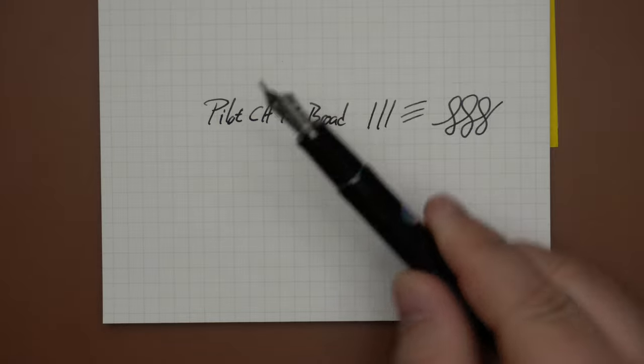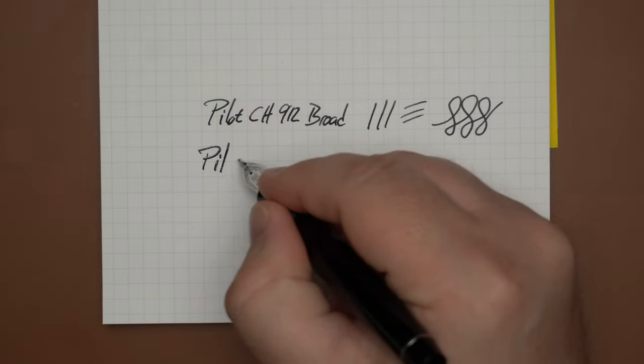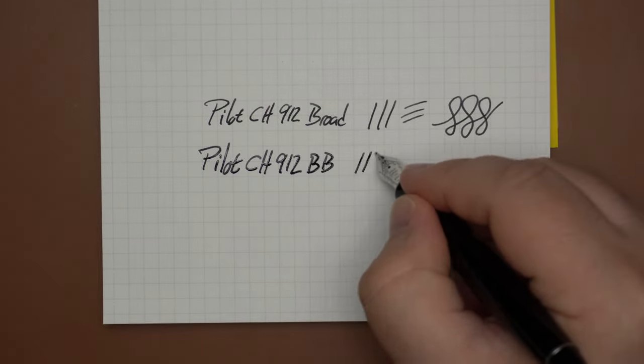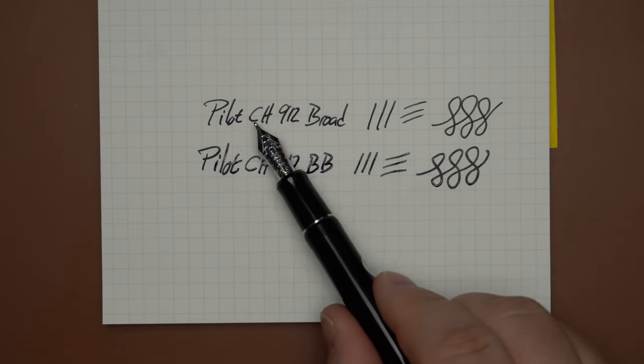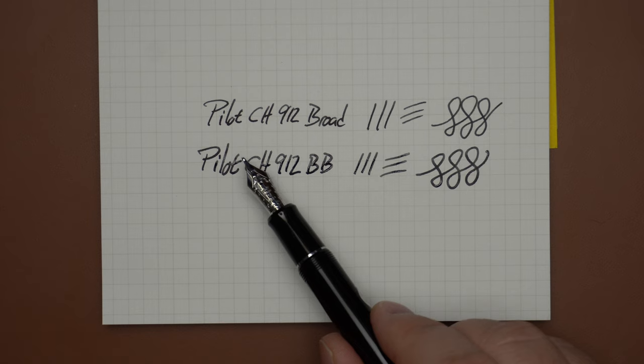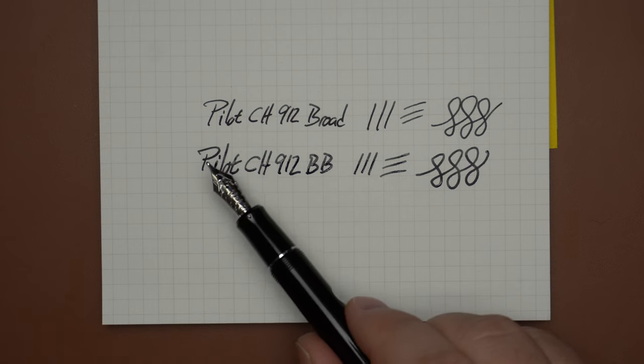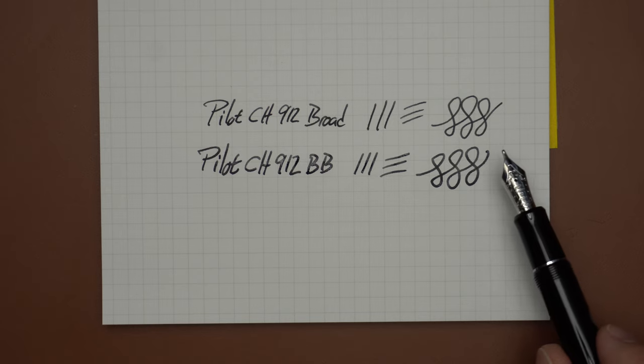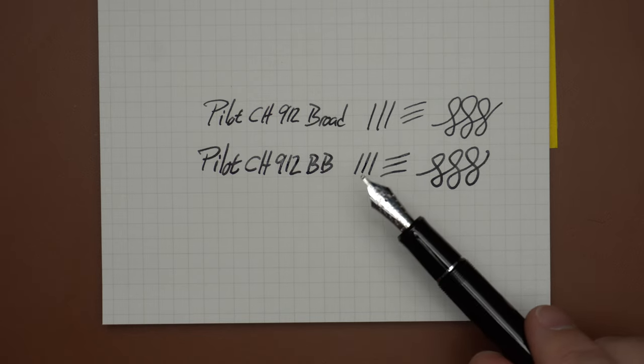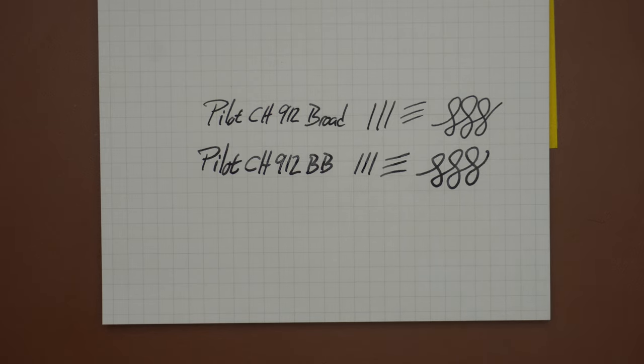We can go bigger, and that's the double broad here. And as you can see, there is a fairly good jump between the broad and the double broad. I don't know if it's twice as broad, but it is definitely a lot heavier line. You're getting more markery as we go here, and this one is a very smooth operator as well.